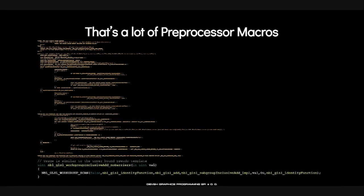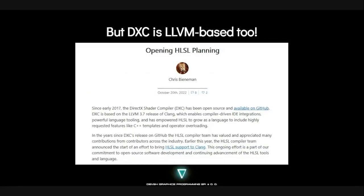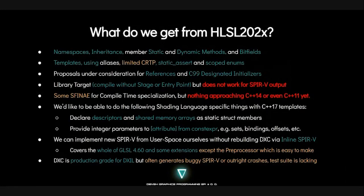To quote Master Yoda: there is another. While DXC and DXIL being based on LLVM 3.7 and its IR is not much in comparison to Metal, the fact that its successor will not only be based off the latest LLVM but also probably integrated into Clang itself captured our full attention. It turns out a lot of our needs and wishes are being met by HLSL 2020x. We have namespaces, inheritance — simple inheritance, which is what we want — static and dynamic methods, bitfields, templates, using aliases, a limited curiously recurring template pattern, static assert, and scoped enums. There are proposals under consideration for references and C99-designated initializers. There is a library target, but that does not work with SPIR-V output.